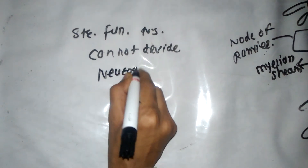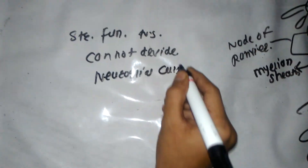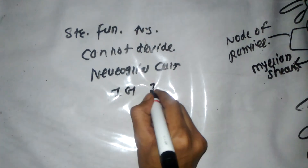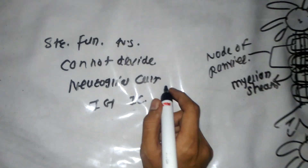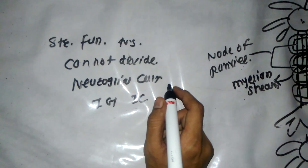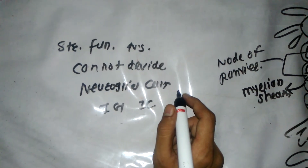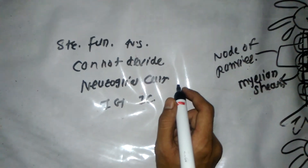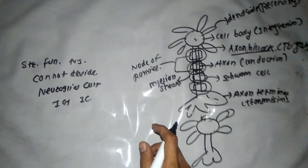Neurons are protected by neuroglia. The functions of a neuron include impulse generation, impulse conduction, and action potential generation. The neuron is also called the physiological unit of the nervous system. This was a brief introduction about the neuron.